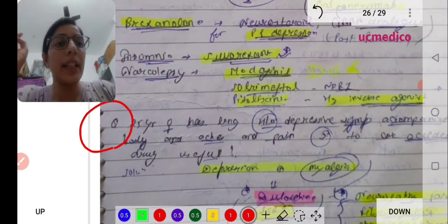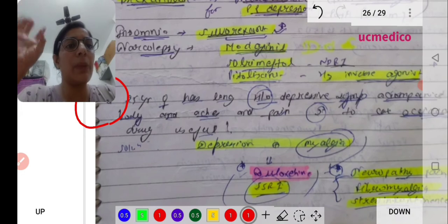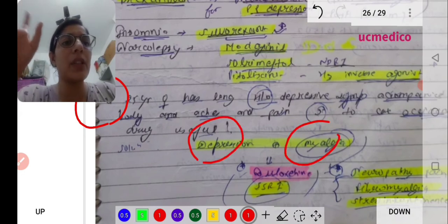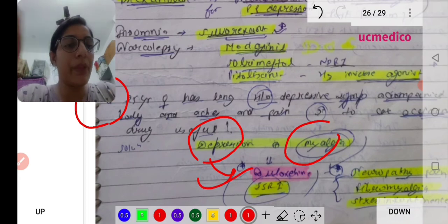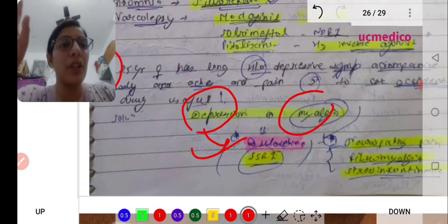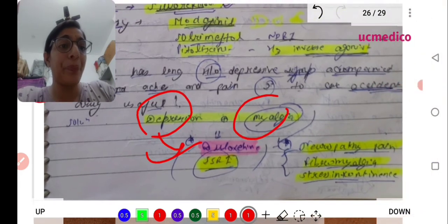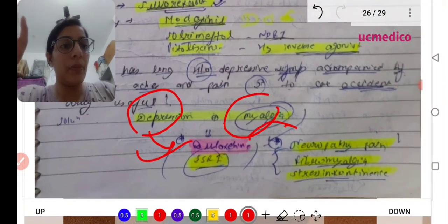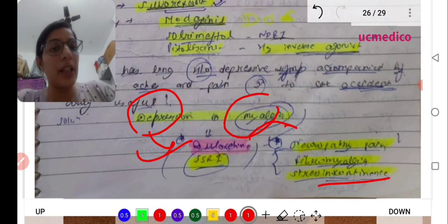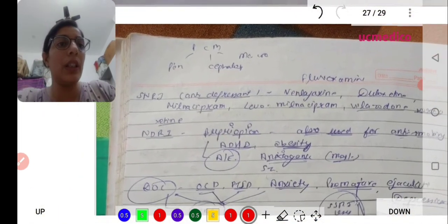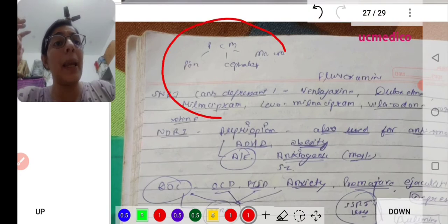A question: a lady comes with depression and mild neuropathy pain. Which drug will you prefer? Duloxetine - an SNRI. It will treat neuropathic pain, fibromyalgia, and stress incontinence also.